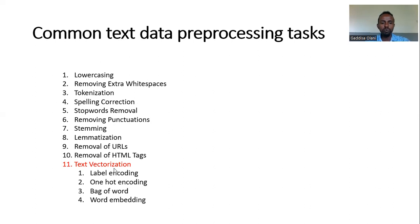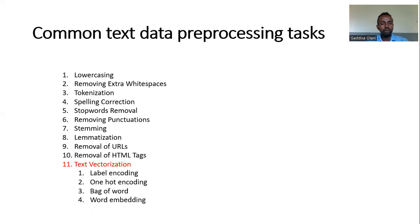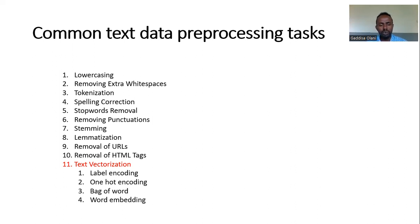If you have a video, you can see the text data, which is called text vectorization. If you have a class, you can see the Neural Network. You can see the text data which is called text vectorization, activation function, etc.